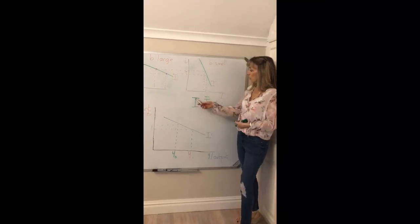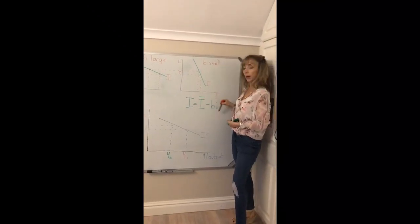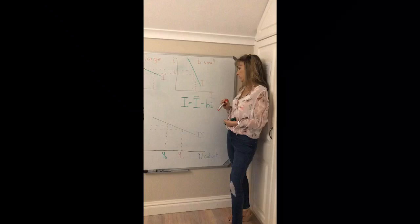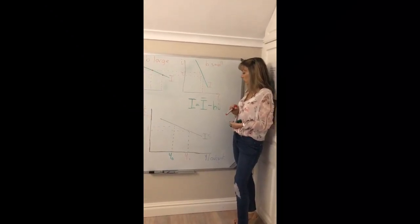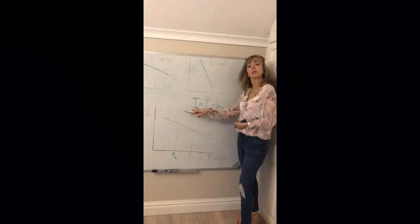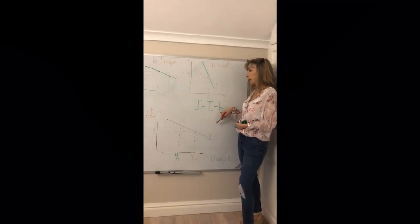Recall that your planned investment is given by this function: an autonomous component independent of income and interest rate, and then the part that depends on the interest rate. The responsiveness of planned investment to the interest rate is given by B.